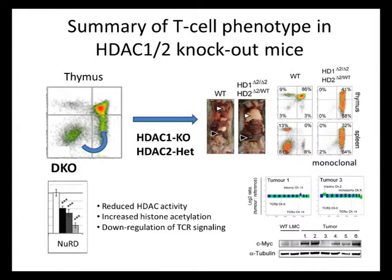We see trisomy of chromosome 2 and trisomy of chromosome 15. Chromosome 15 is particularly interesting as it's a hallmark of acute leukemias in mice, containing the very important gene c-Myc, which is thought to amplify transcription and drive virtually all known cancer types. We also see upregulation of c-Myc at the protein level. In summary, HDAC1 and HDAC2 are important for proliferation and T-cell development, and a suboptimal amount of HDAC1/2 activity results in the accumulation of immature T-cells and acute leukemia.